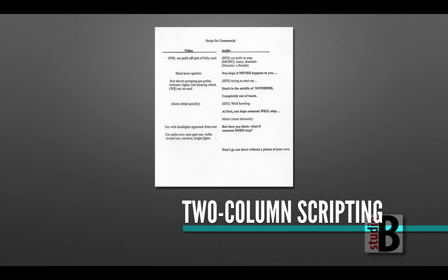Today we're going to go over quickly the two-column script. There's an example on the screen — it looks different than what we're used to, which is the screenplay format. The two-column script is divided up: you have the video aspects on the left side and the audio aspects on the right side. You have to think about exactly what's going to be happening on screen at any given time.